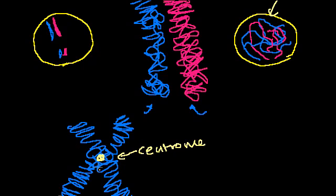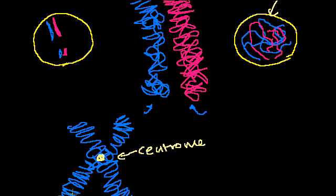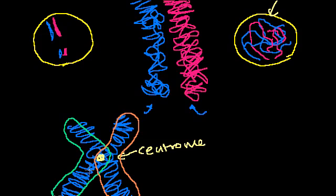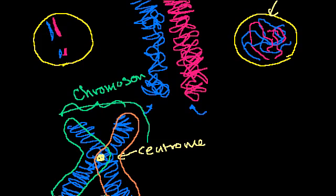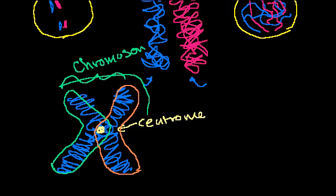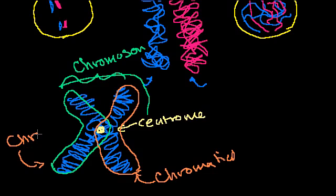So what's a chromatid? After DNA replicates, let's say I have my DNA before replication — one version from my dad, one from my mom. When the version from my dad replicates, it creates another identical version of itself. That identical piece is initially attached to the original at a point called the centromere. Now, even though I have two strands attached, I still call this a chromosome. But now each individual copy is called a chromatid — so I have one chromatid and another chromatid. Sometimes they're called sister chromatids because they have the same genetic information.